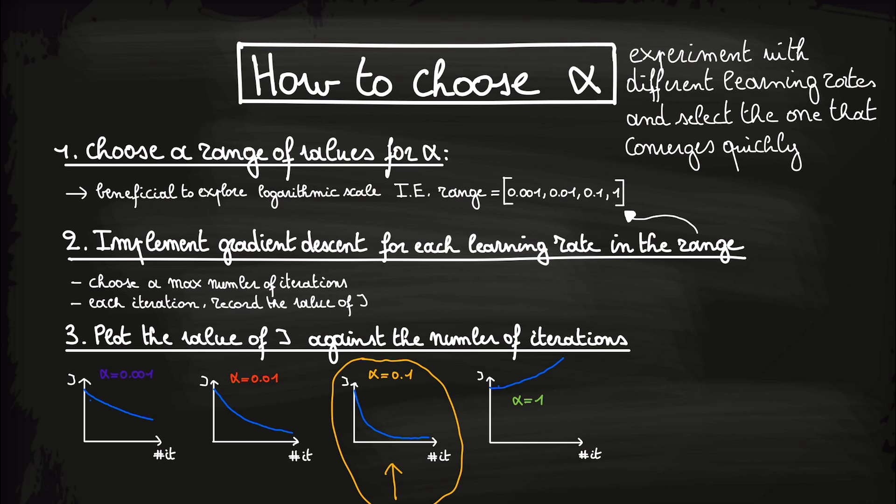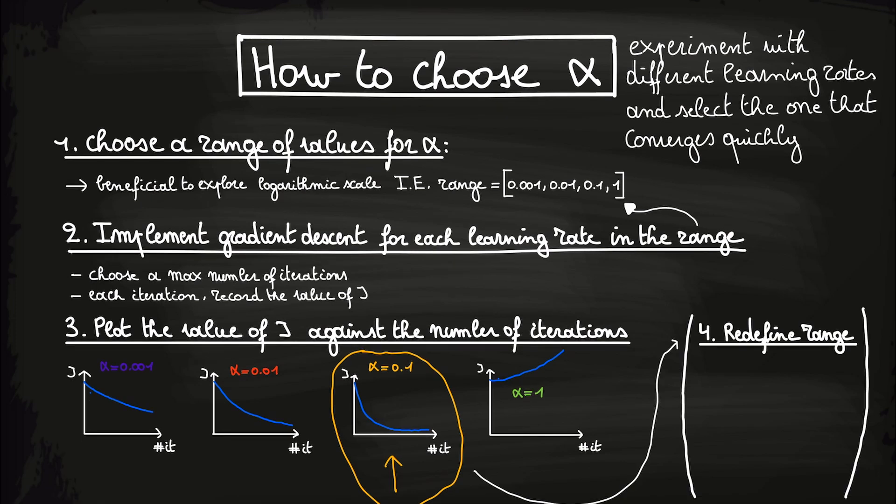We can now redefine our range. The idea is to narrow down the range and pinpoint the learning rate that results in the fastest convergence without overshooting or oscillating. For example, we can now take a range of 0.03, 0.06, 0.1, 0.2, and 0.3.